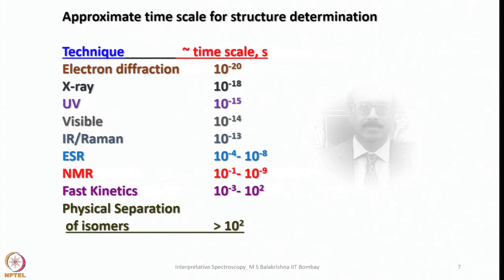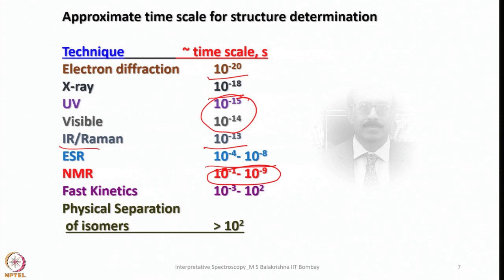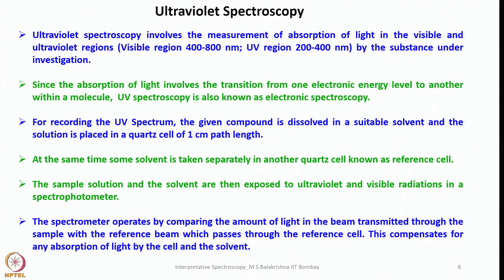Before we go further, let us look at the approximate time scale for structure determination with various techniques. Electron diffraction goes up to 10⁻²⁰, X-ray up to 10⁻¹⁸, UV and visible comes in the range 10⁻¹⁵ to 10⁻¹⁴, IR would be around 10⁻¹³, and ESR is 10⁻⁴ to 10⁻⁸. For NMR, fast kinetics would be 10⁻³ to 10², and physical separation of isomers has a time scale greater than 100 seconds, where we should be able to visually monitor and separate crystals of different morphology. So let us look more simply at ultraviolet spectroscopy.